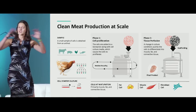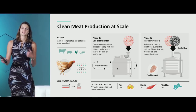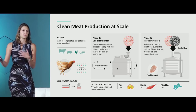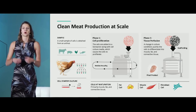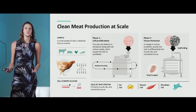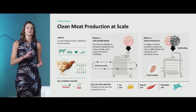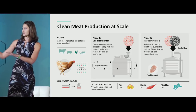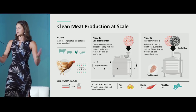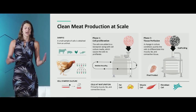This schematic is a generalized process — each company will take a slightly different approach. Some companies going for minced meat products or muscle tissue as an ingredient in a processed meat product might not have the same dependence on scaffolding and the tissue formation phase of the process. But this gives us a sense of the various aspects that companies may incorporate.